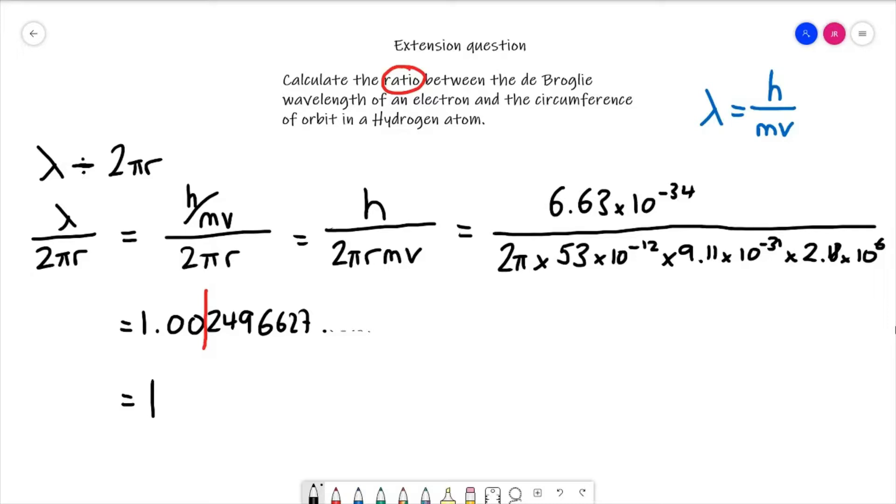Our electron, if it does have one wavelength for its circumference, that will be our ground state for the electron. As you go higher up the energy levels, we can already start to imagine in the ground state, which is sometimes called n equals 1. The wavelength and circumference are exactly the same, so lambda is equal to 2πr.